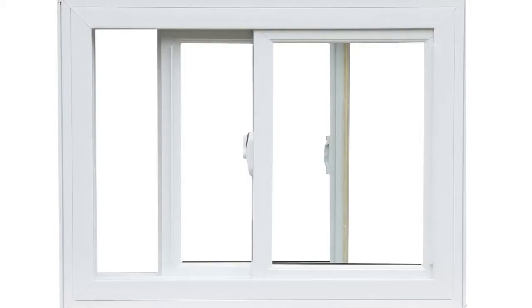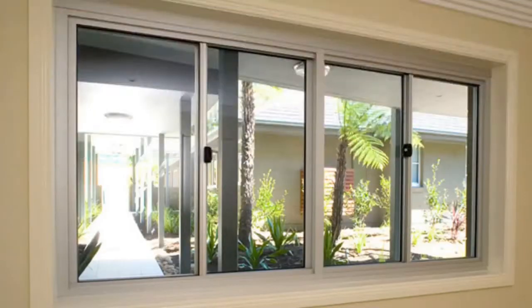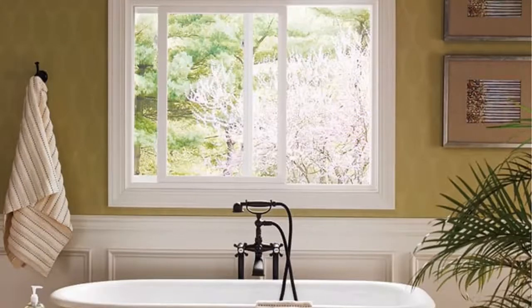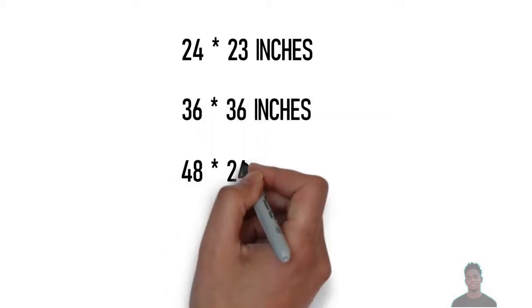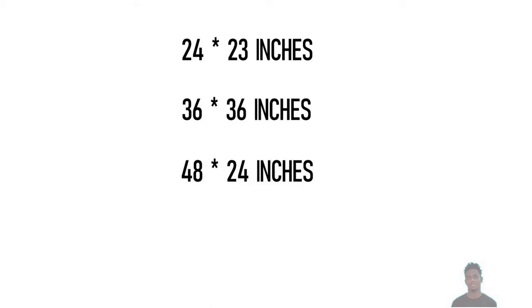Gliders, also known as sliding windows, have two glass panels placed side by side. Although they can be used anywhere in the house, you will mostly find them in bathrooms or on a porch. Standard sliding window sizes are: 24x23 inches, 36x36 inches, 48x24 inches, and 48x36 inches.